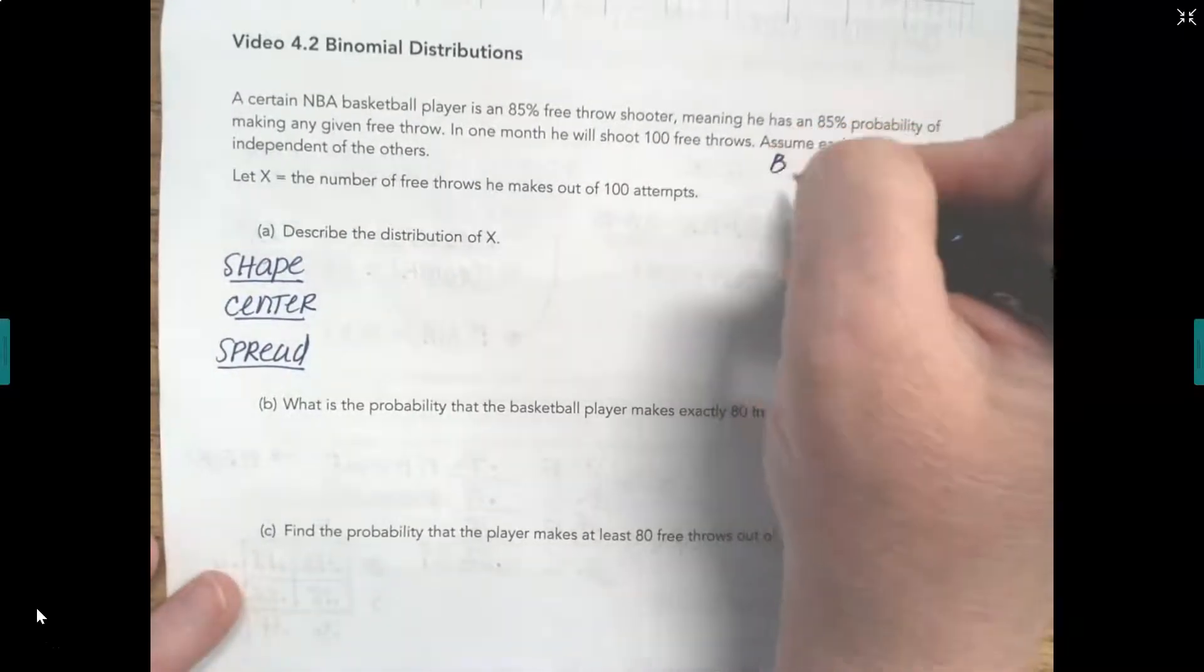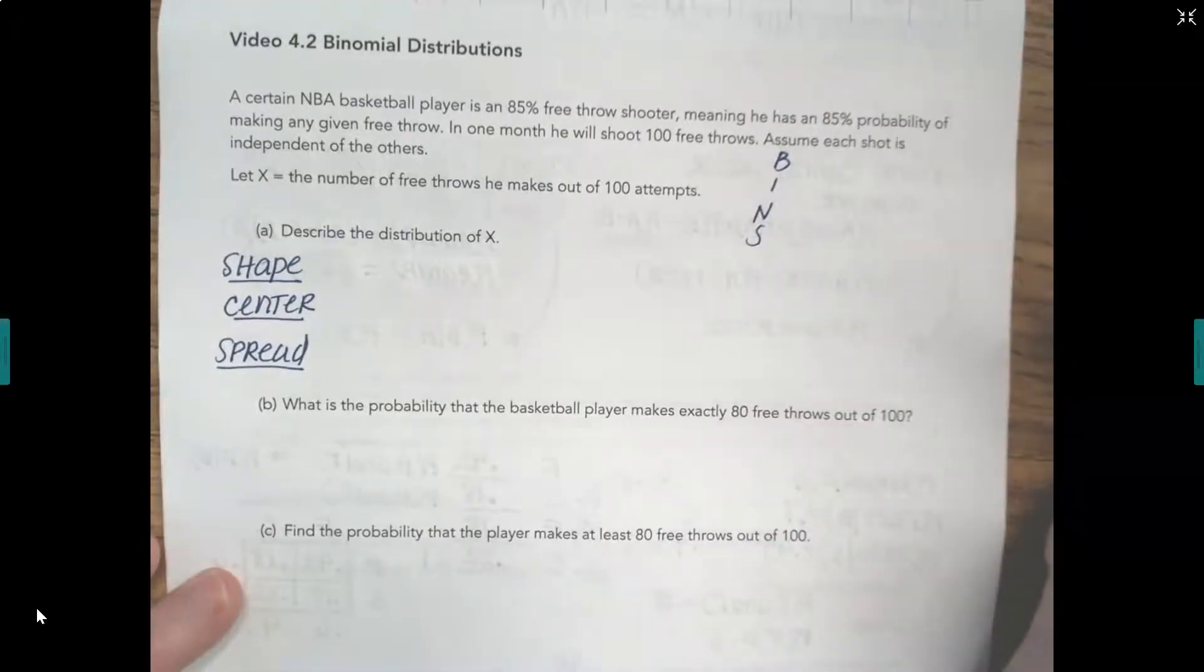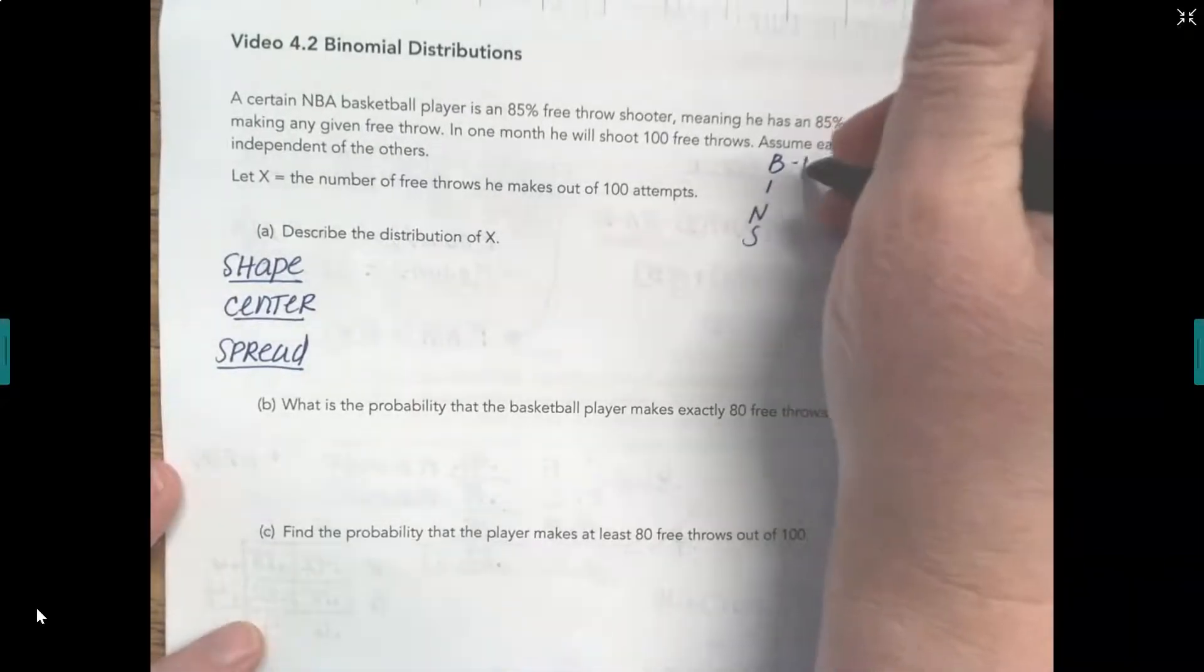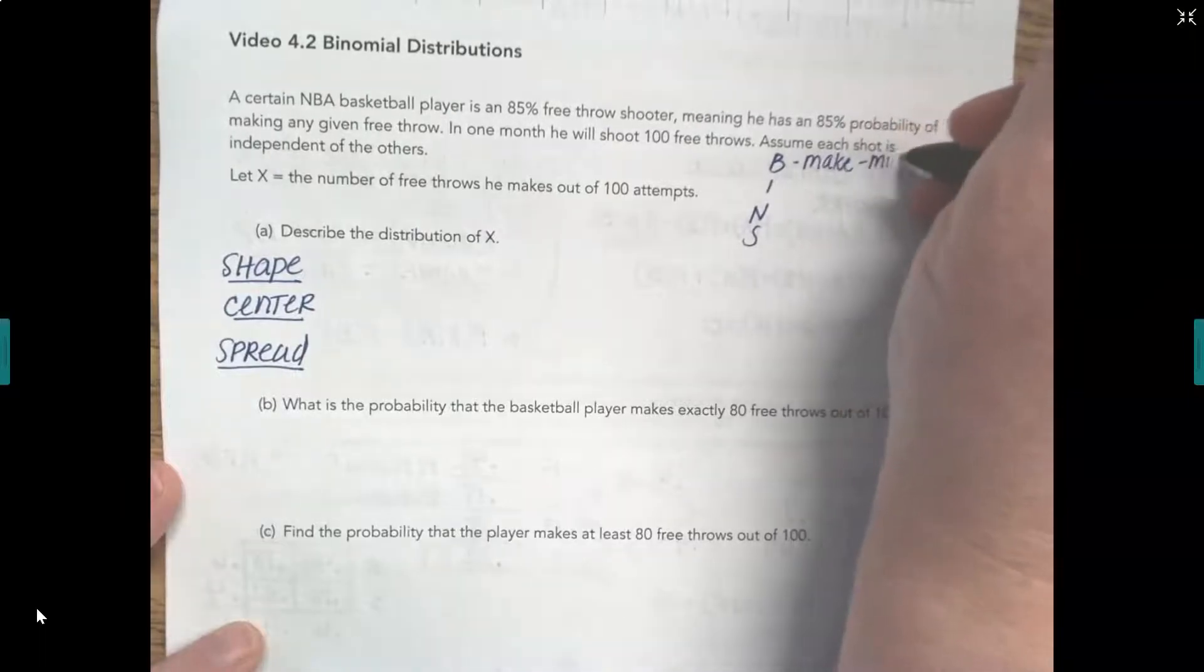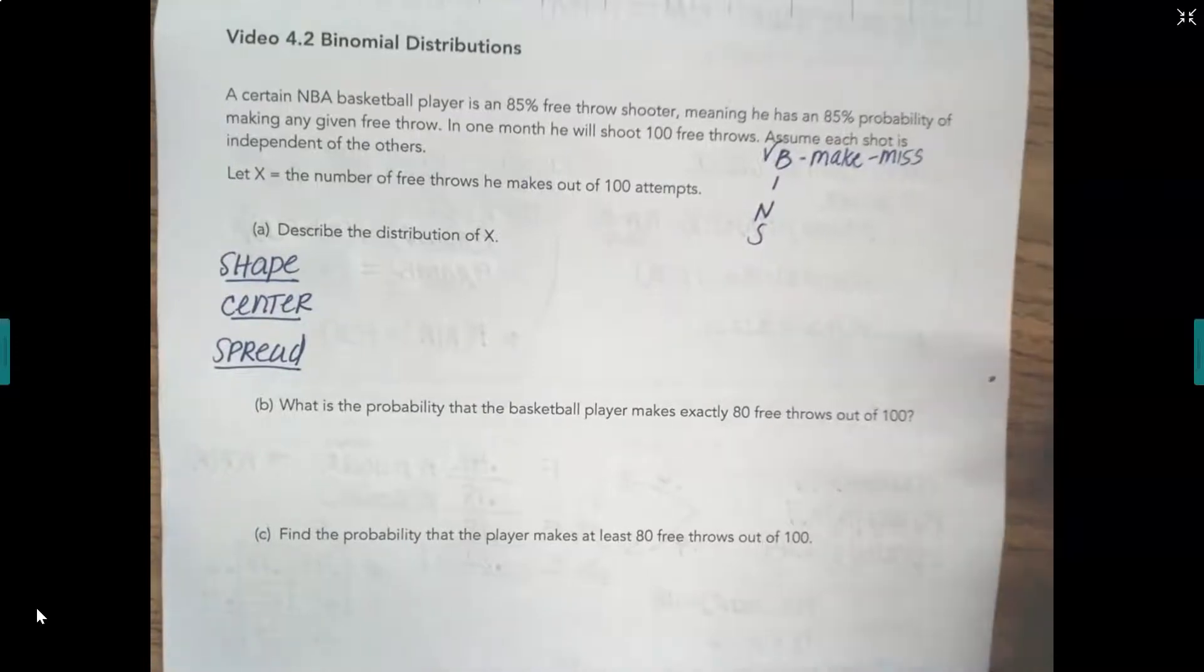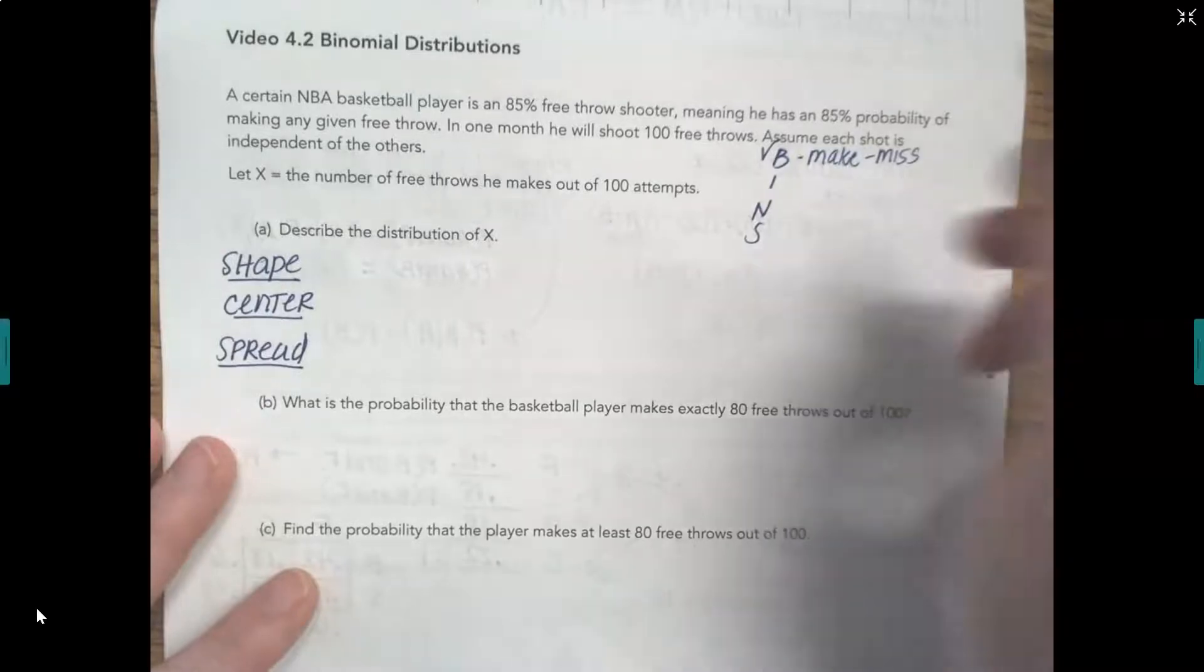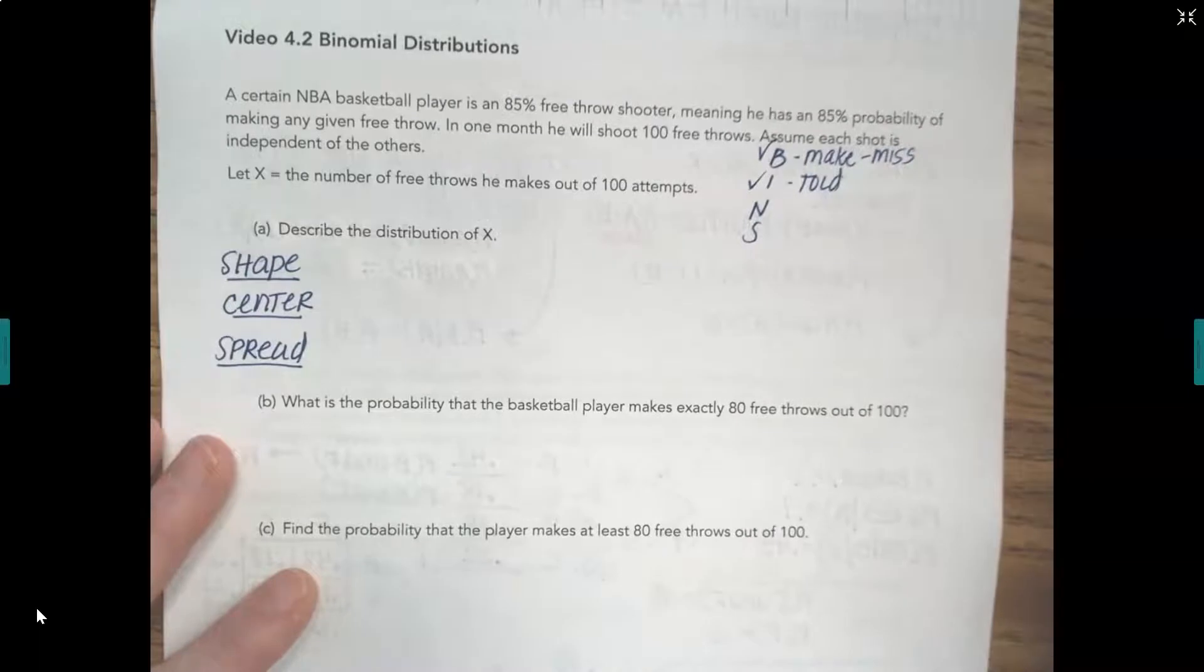For binomial, it's BINS, B-I-N-S. B stands for binary. You have a success and you have a failure. Yes, he can either make the shot or he can miss the shot. So we've got binary. I stands for independence. It says assume each shot is independent. So we're told that. So we're good for independent.